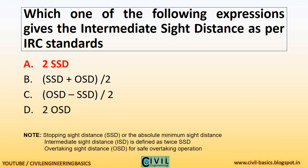Which one of the following expressions gives the intermediate sight distance as per IRC standards? Stopping sight distance (SSD) is the absolute minimum sight distance. Intermediate sight distance (ISD) is defined as twice SSD. Overtaking sight distance (OSD) is used for safe overtaking operations.